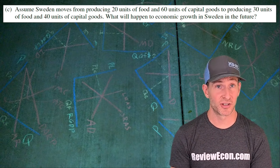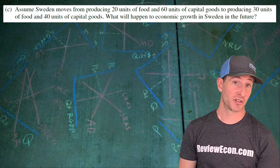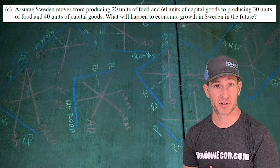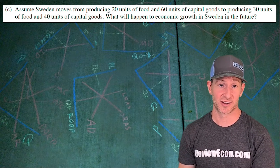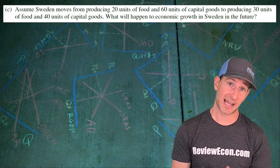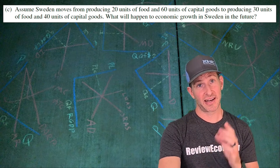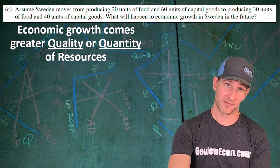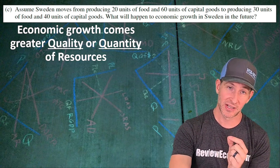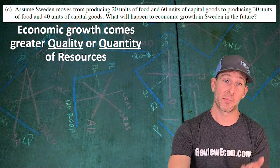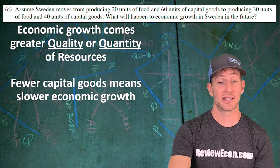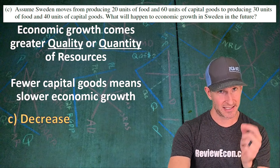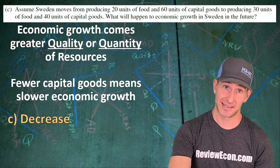For part C, we're going to assume that Sweden is going to change its level of production. It's going from producing 20 units of food and 60 units of capital to producing 30 units of food and 40 units of capital — they're just moving along their production possibilities curve. Now we have to identify what will happen to economic growth within Sweden as a result. The key is understanding what is needed for economic growth: greater quality or quantity of resources, in this case capital goods. We see a decrease in the number of capital goods Sweden is producing, so the answer is a decrease in economic growth.